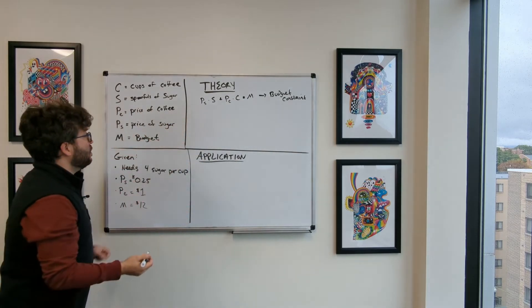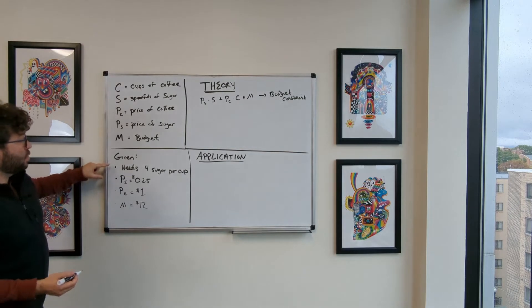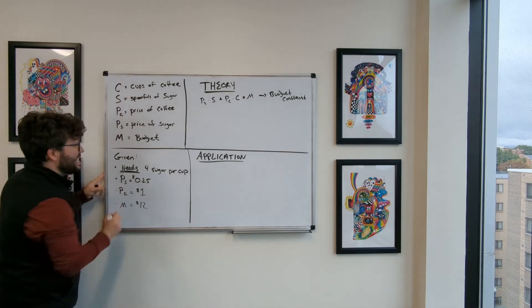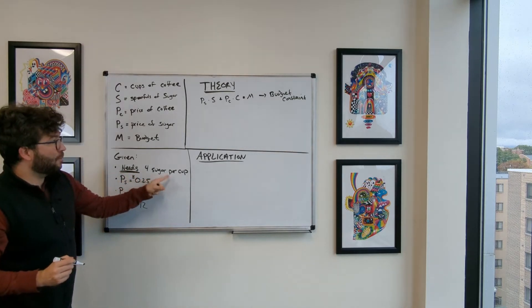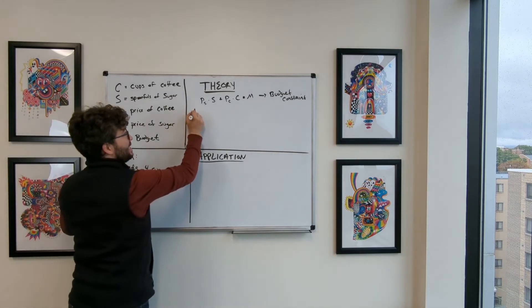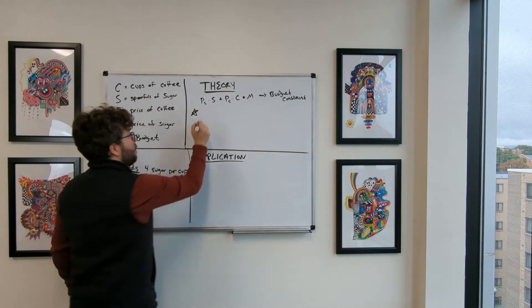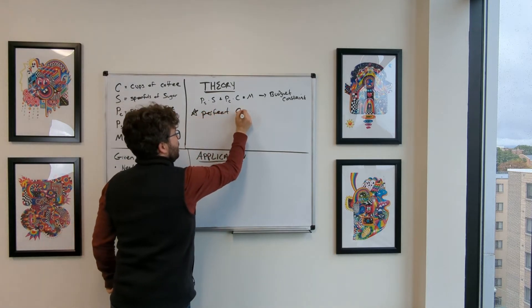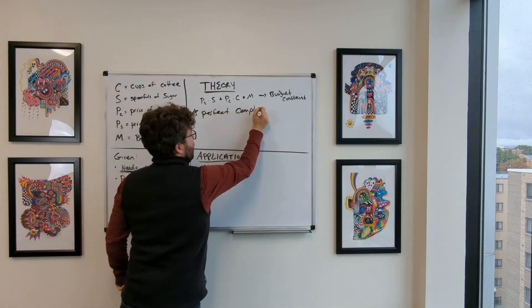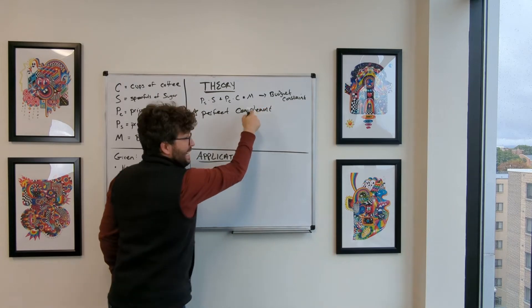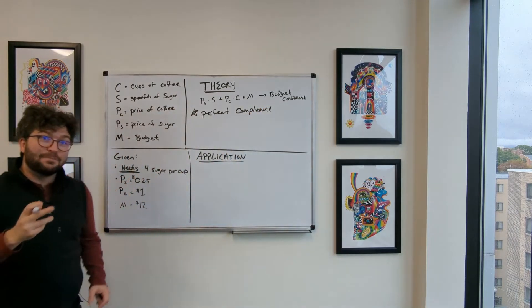Now, we also know that there's got to be some sort of what we're given here is we are given a need for sugar per cup. What this is actually telling us, this is telling us that we have perfect complements. If you remember what a complement is, and this is a complement with an E that go together, it's perfect.